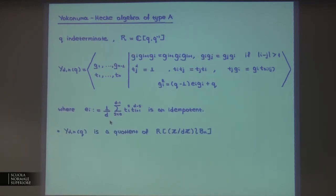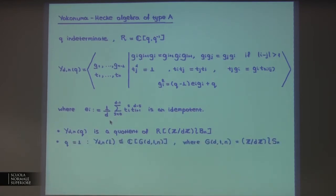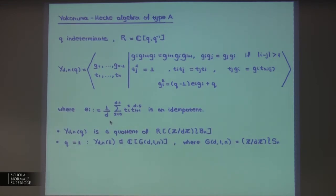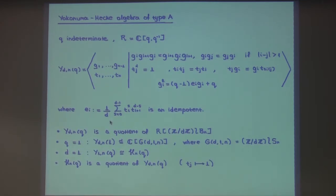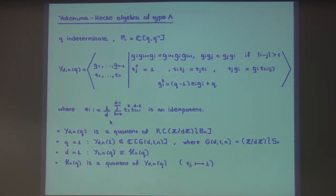This is a quotient of the group algebra of the framed braid group by the quadratic relation. For q equal to 1, we get G_i squared equal to 1, and we obtain the group algebra of the complex reflection group G(d,1,n), which is the wreath product of the cyclic group of order d with the symmetric group. For d equal to 1, we no longer have T_i's and we recover the Iwahori-Hecke algebra. For d different from 1, the Iwahori-Hecke algebra is a quotient of the Yokonuma-Hecke algebra — you just send all the T_i's to 1.